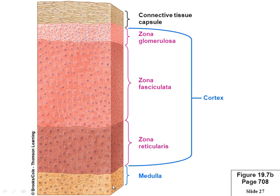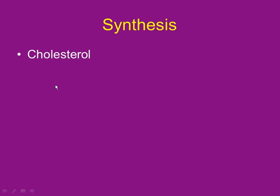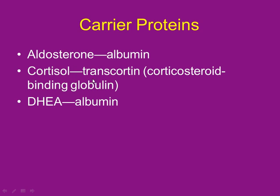The center layer — the medulla — doesn't use cholesterol. The medulla starts with tyrosine and makes catecholamines: dopamine, norepinephrine, and epinephrine. The three cortical hormones are lipid-loving since they're made from cholesterol. They can't flow through blood easily, so they need a carrier protein. Aldosterone binds to albumin; cortisol uses transcortin; DHEA also binds to albumin.